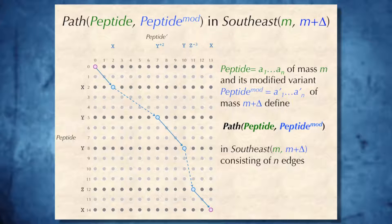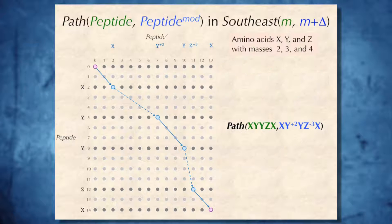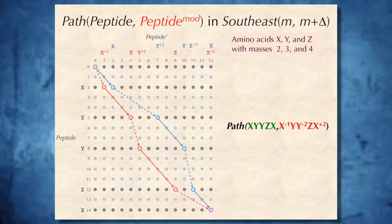we can construct paths formed by peptide and peptide mod in the graph South-East M M plus delta, and such path is shown in this graph. So this blue path corresponds to a modified peptide with two modifications shown in blue here. And this red path corresponds to a peptide with three modifications shown in red here.